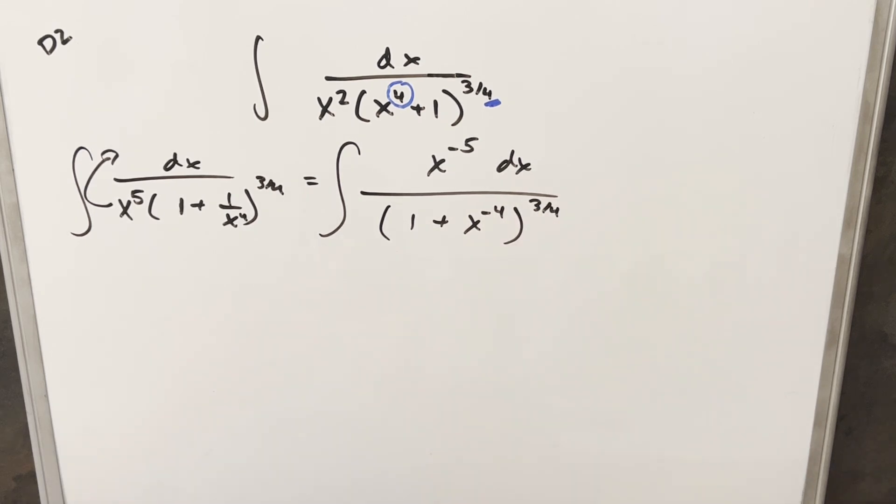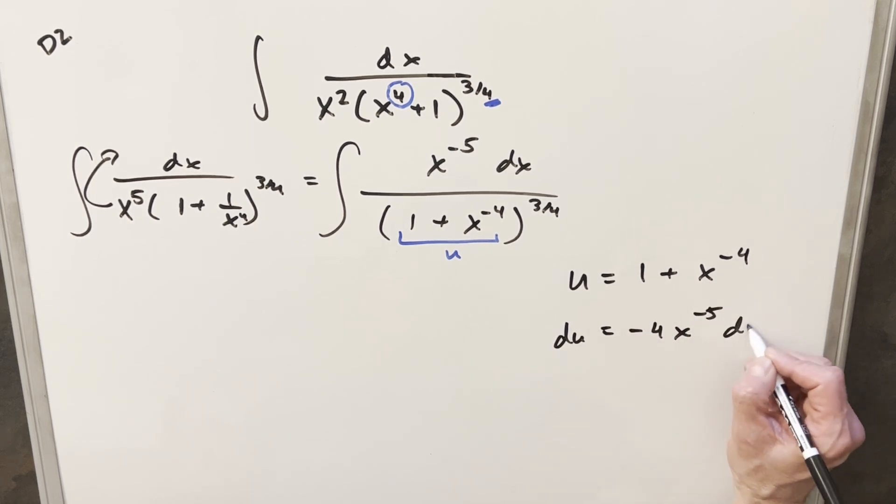But now at this point it looks like a u substitution could work if I just make this piece right here my u. So let's see what happens when we do that. We'll come over here and we'll create a u, 1 plus x to the minus 4th. I'll take a derivative here. So we're going to have du, derivative of 1 is 0, derivative of this with power rule, minus 4, x to the minus 5, dx.